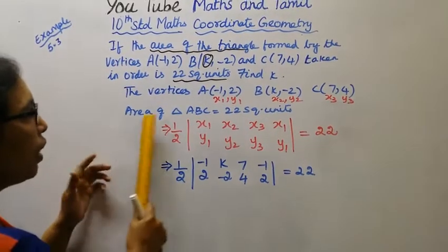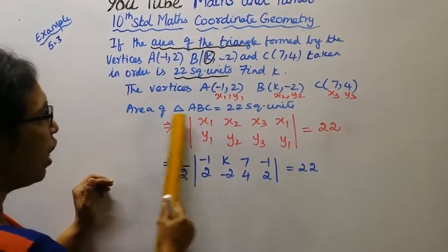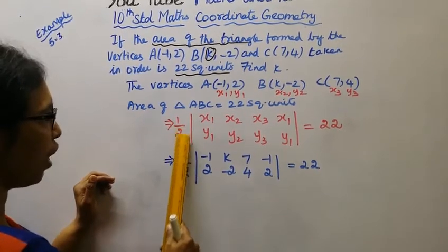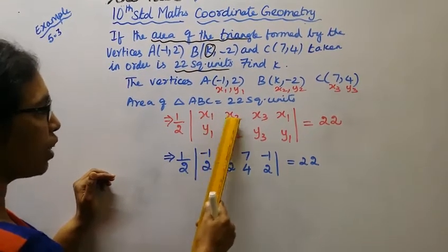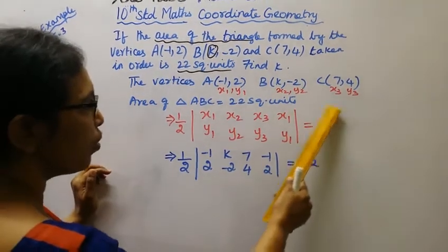Area of triangle ABC is 22 square units. Area of triangle formula: half into x1, y1, x2, y2, x3, y3, x1, y1. This is equal to 22.